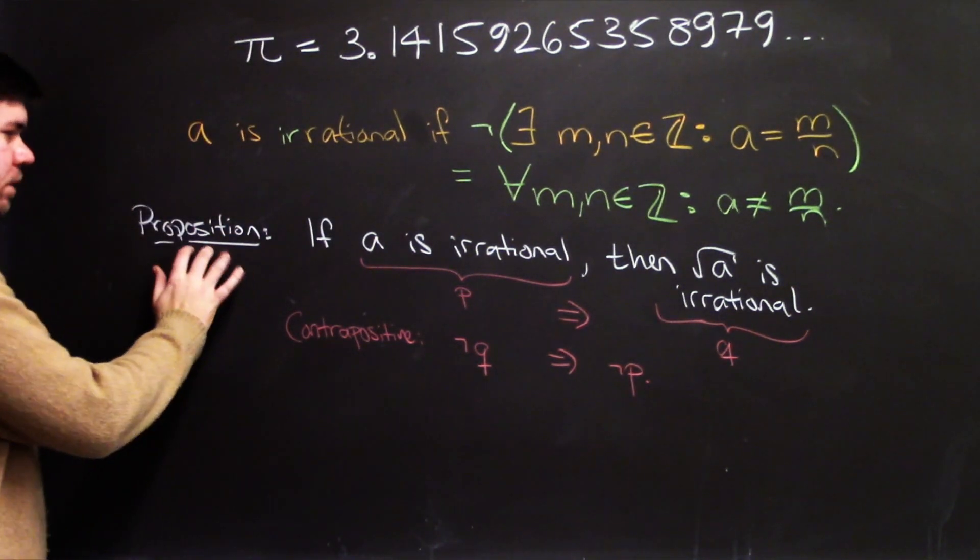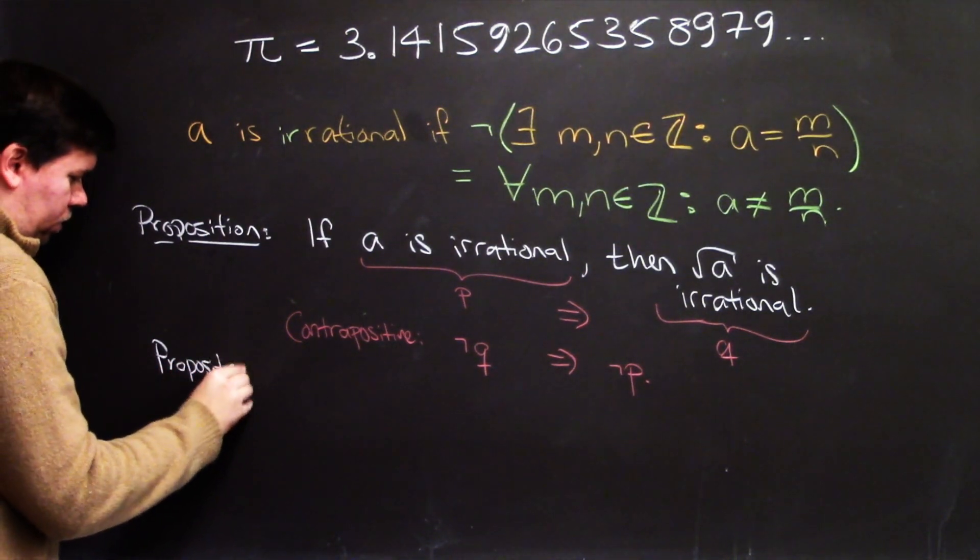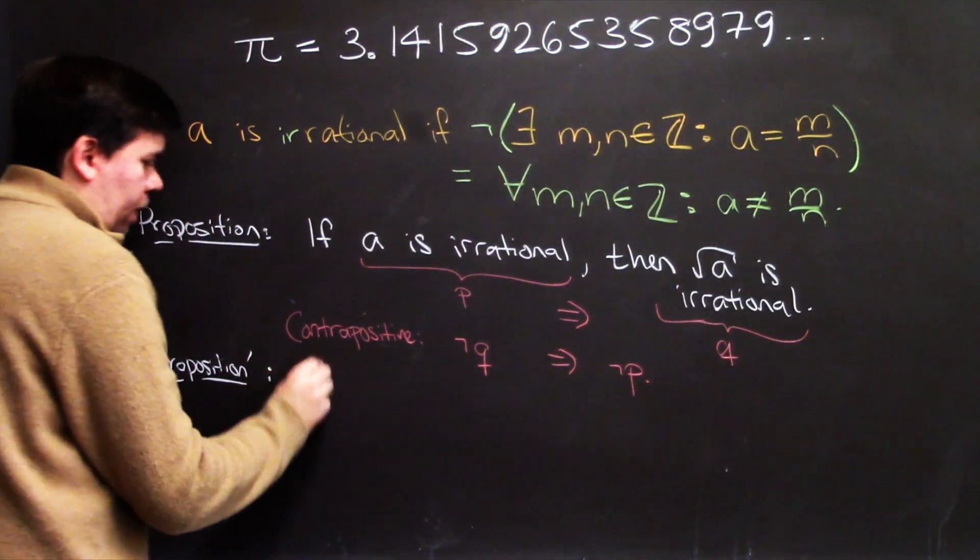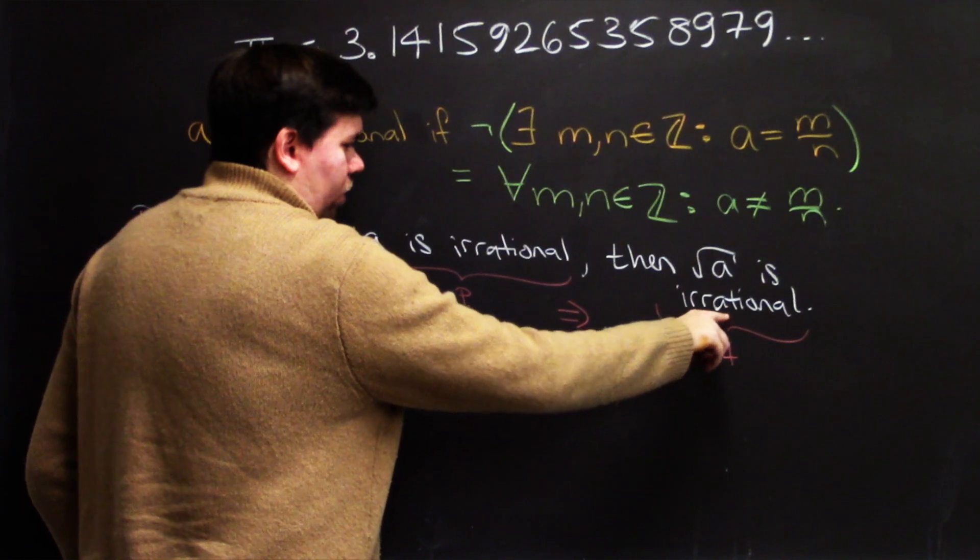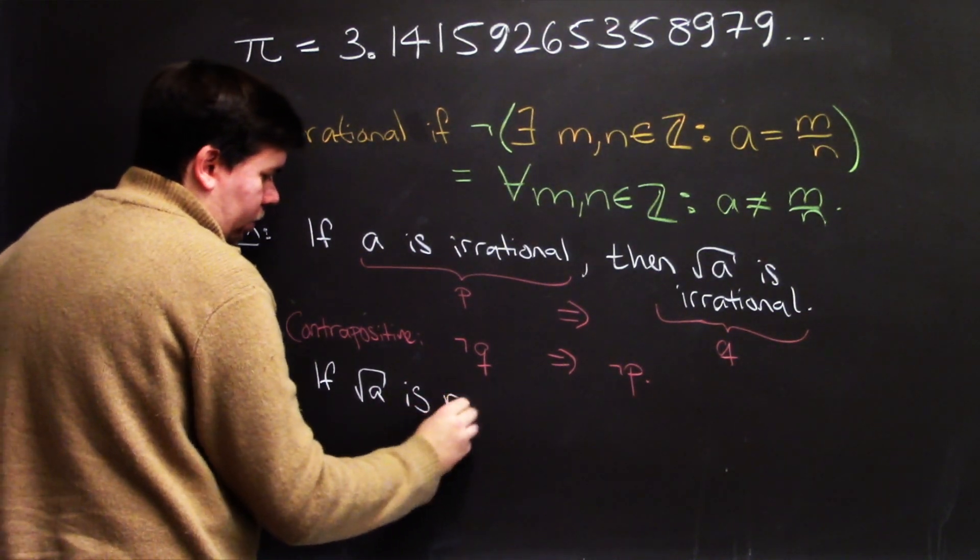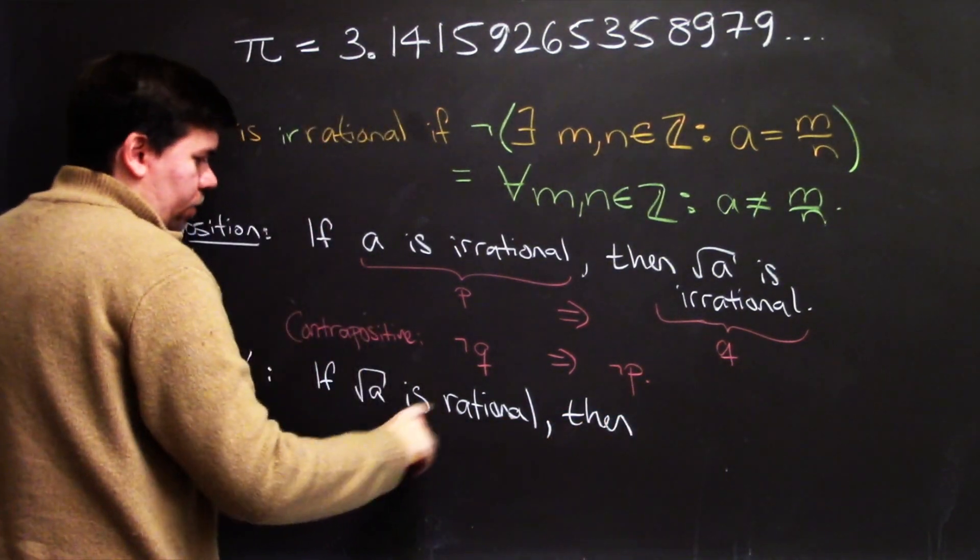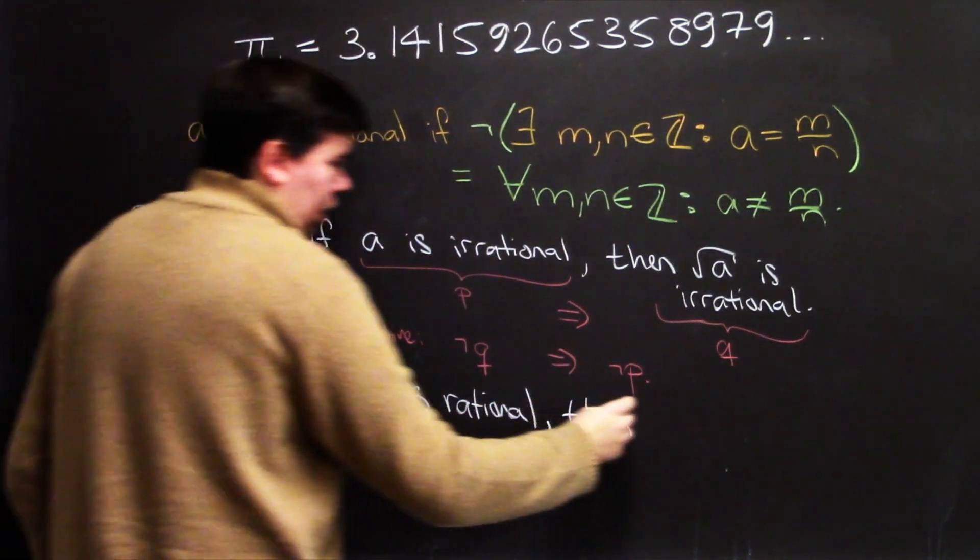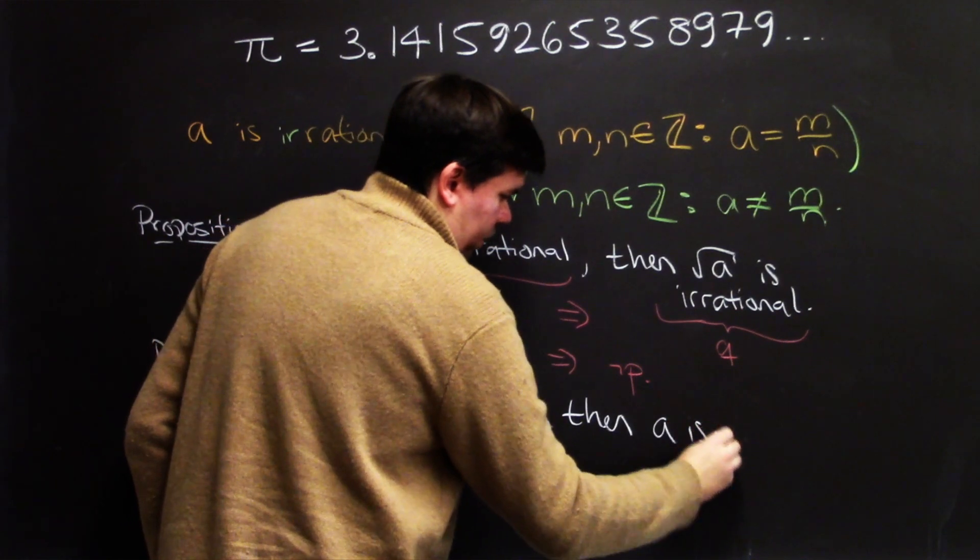So that means instead of proving this proposition, we can prove what I'll call proposition prime. That is, we're going to prove the contrapositive of the proposition, if not q, so the opposite of q, q being the square root of a is irrational, so not q is the square root of a is not irrational. That is, the square root of a is rational. If the square root of a is rational, then, that's not q, then not p. p is the square root of a is irrational, so not p is then a is not irrational, a is rational. Then a is rational.